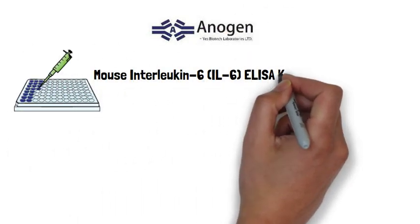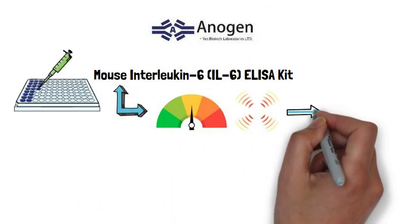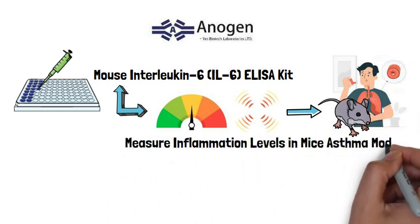Anogen's mouse interleukin 6 ELISA kit was used in this study to measure levels of inflammation in the mice asthma models.